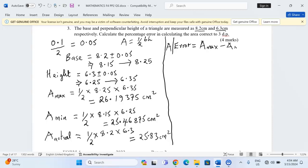So this is going to give us 26.19375 minus 25.46875. Then we take now the average. So this is going to give us 0.725 divided by 2.